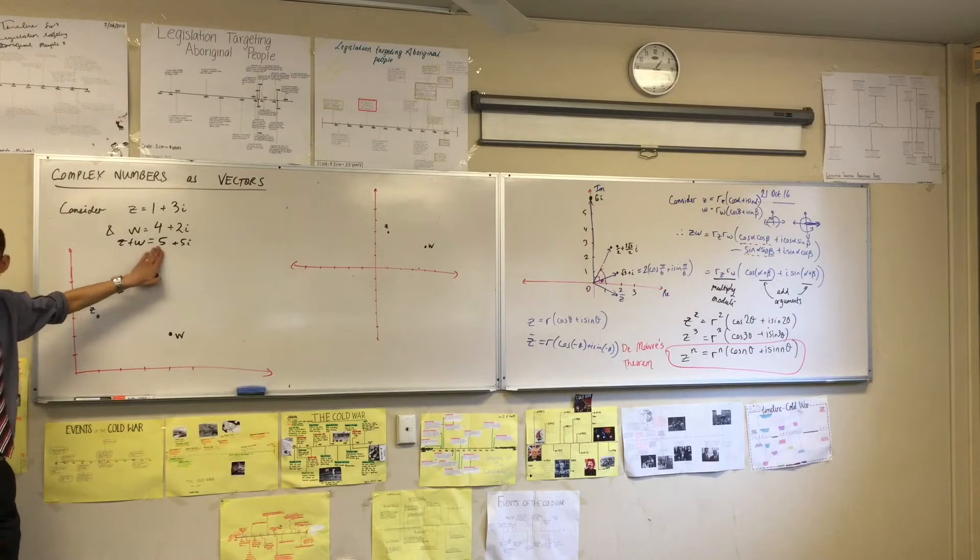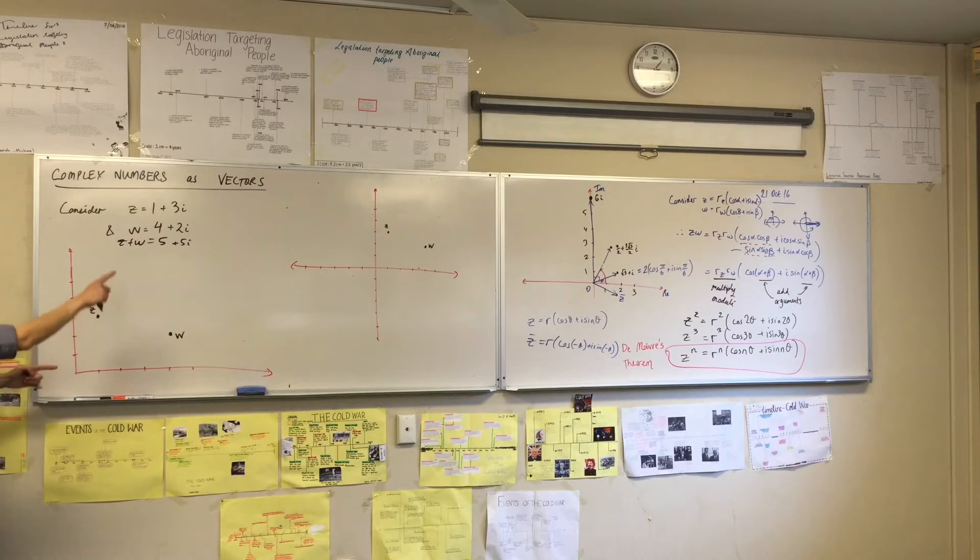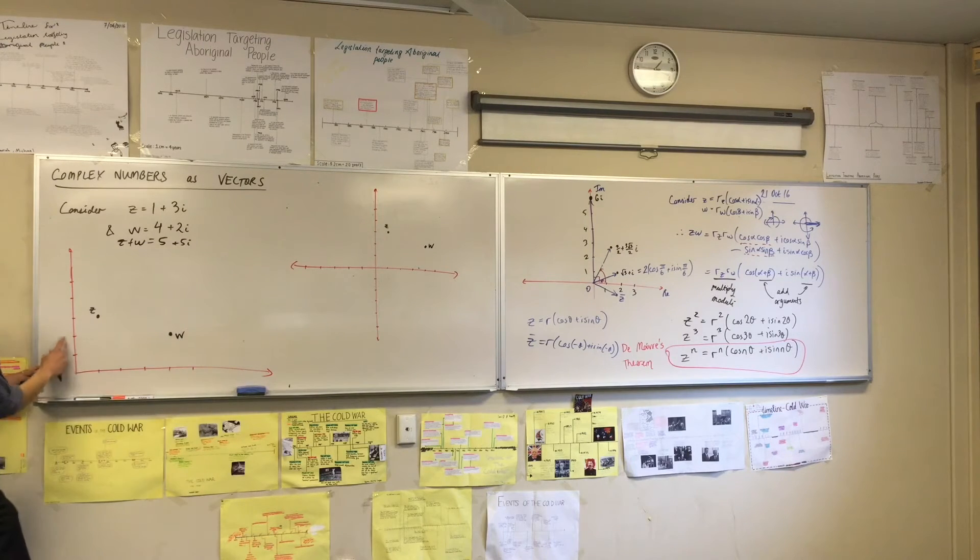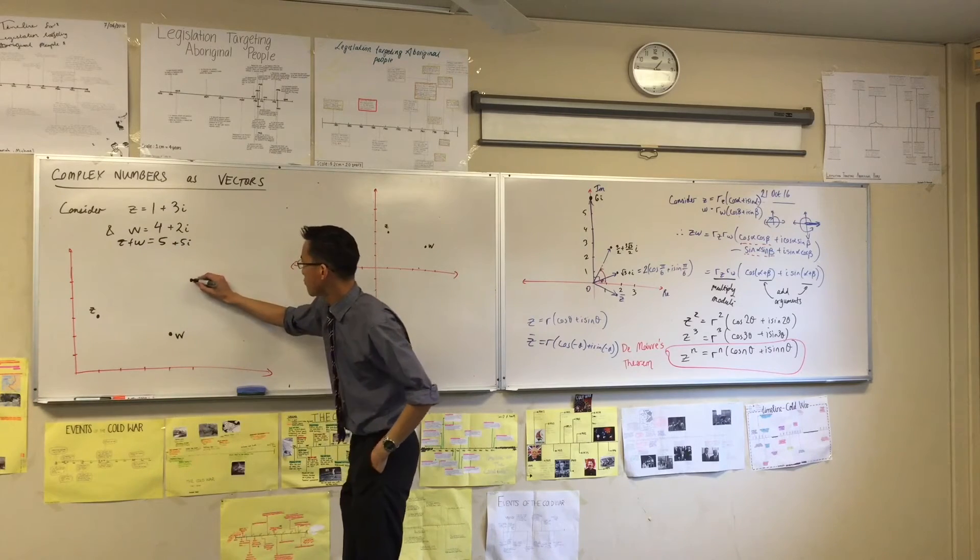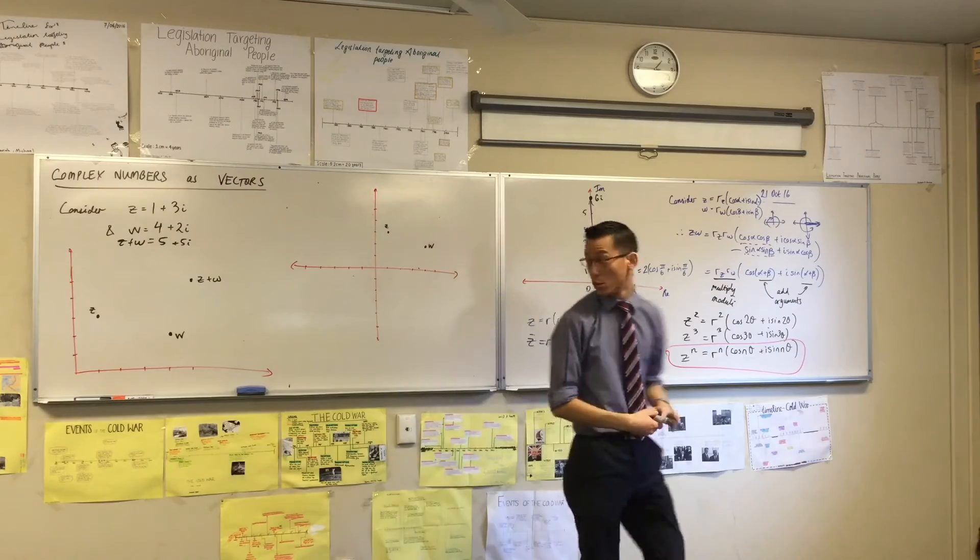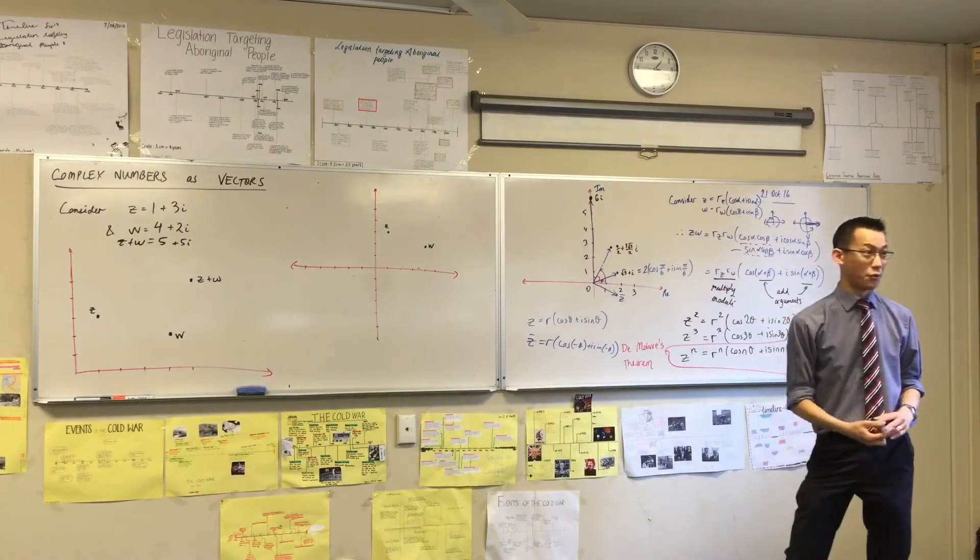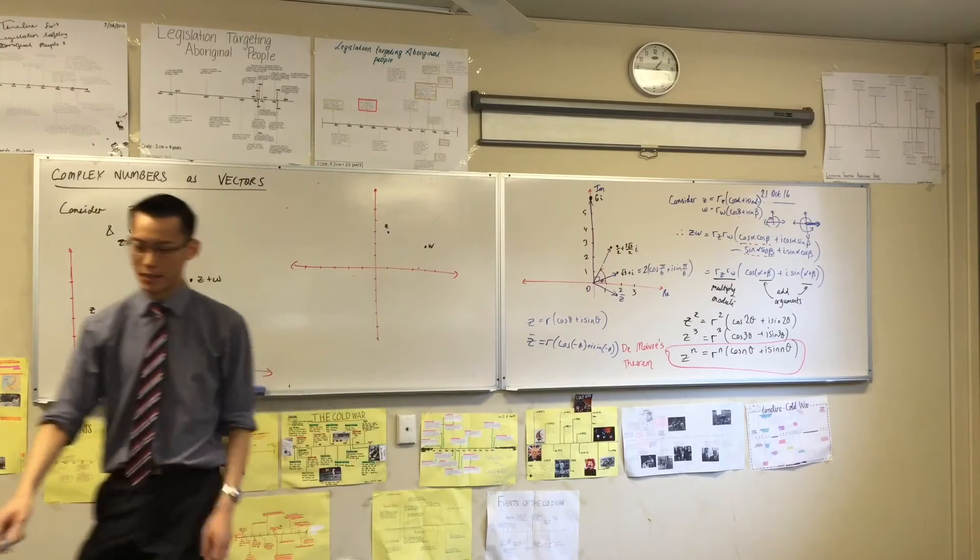So Z plus W is 5 plus 5i. Where is that on our diagram? Where physically is it? It's all the way up here. I've got 1, 2, 3, 4, 5, and that's also 5, so I'm going to put that here. Now at the moment, this just looks like a random set of three points. But using our understanding of vectors unlocks what is happening.